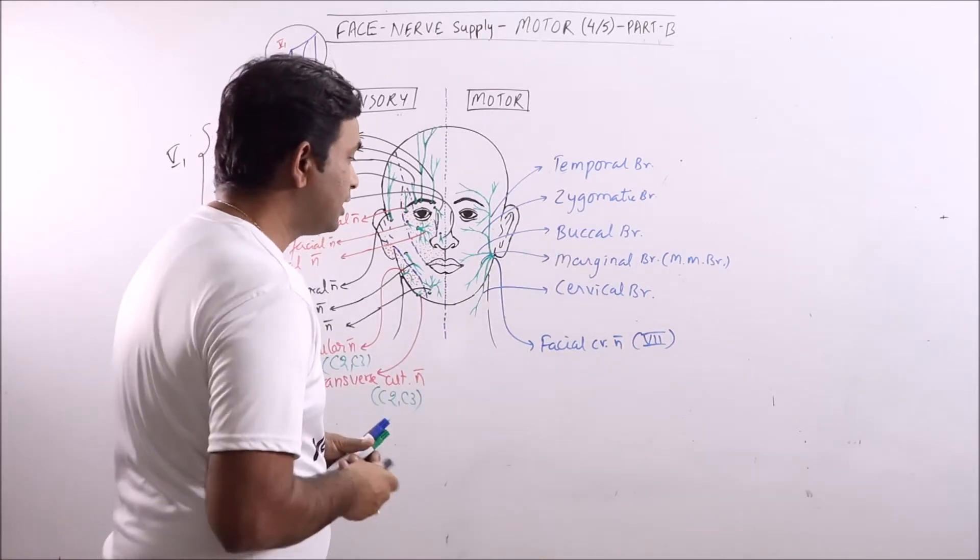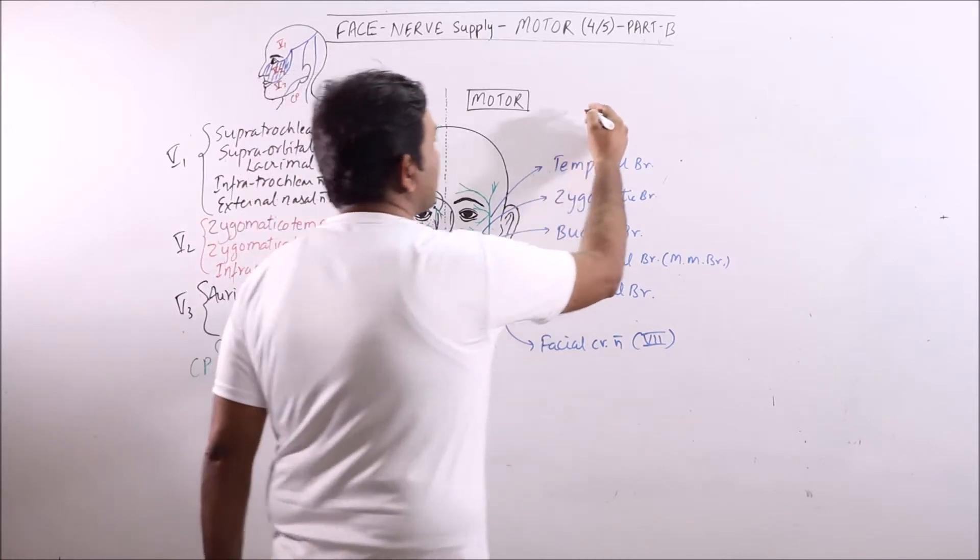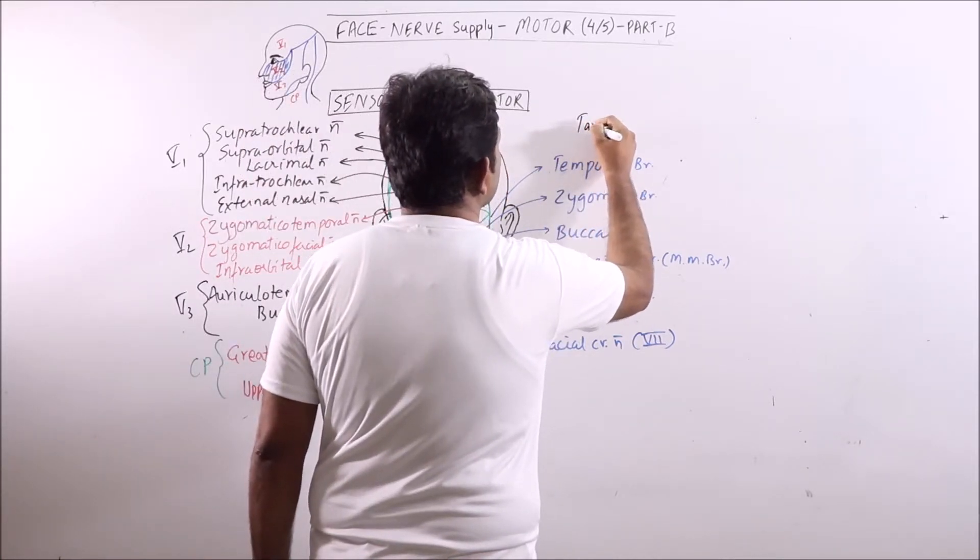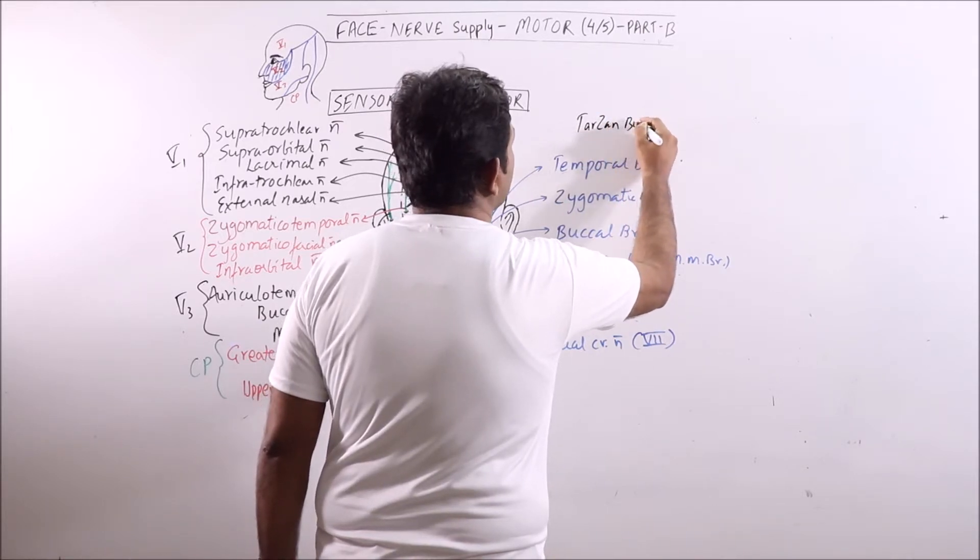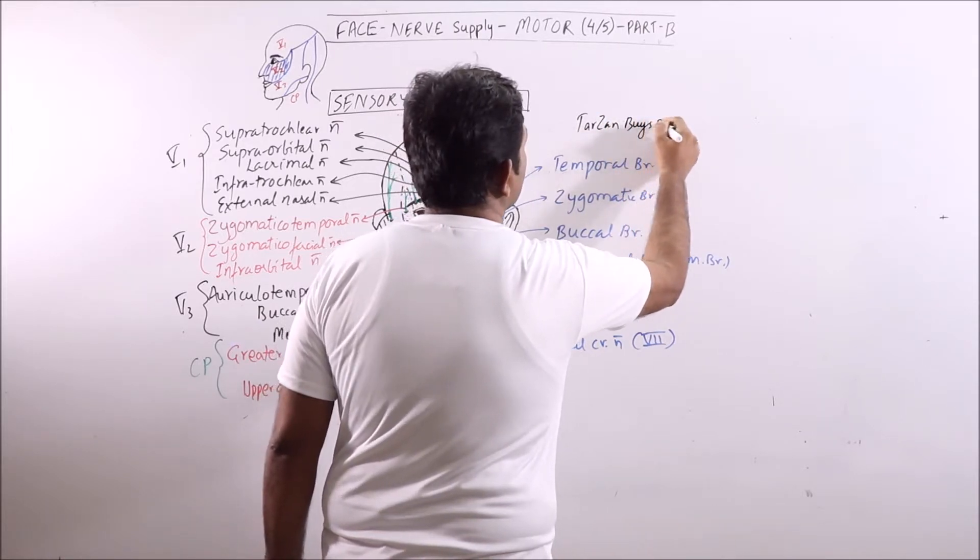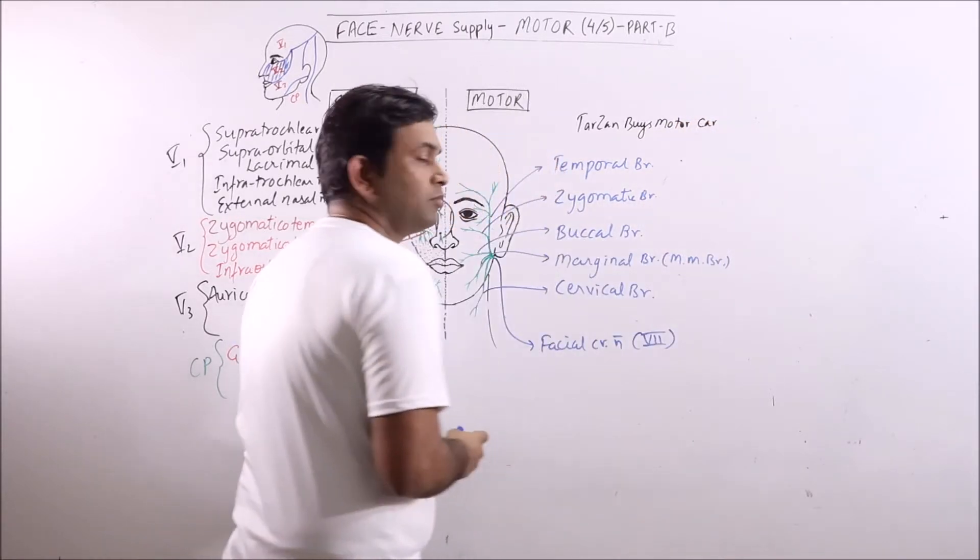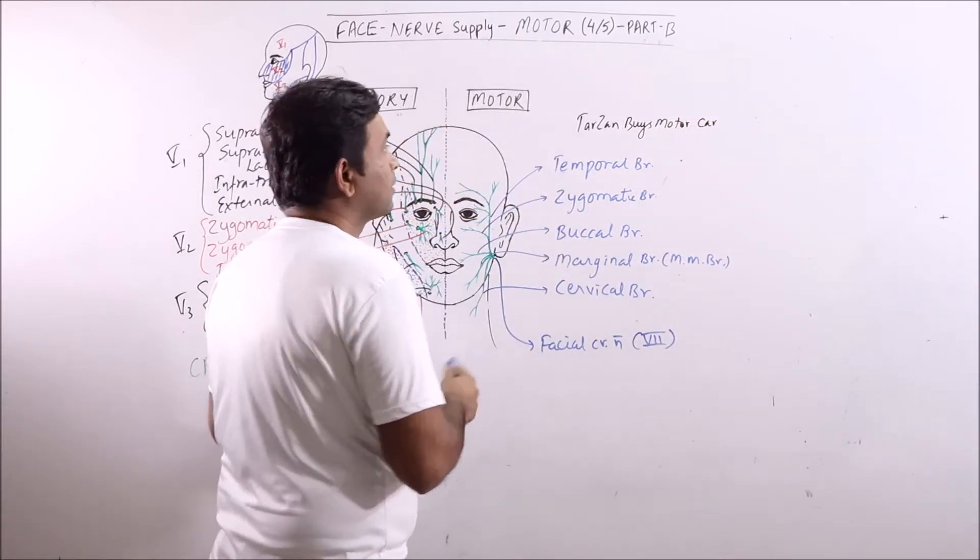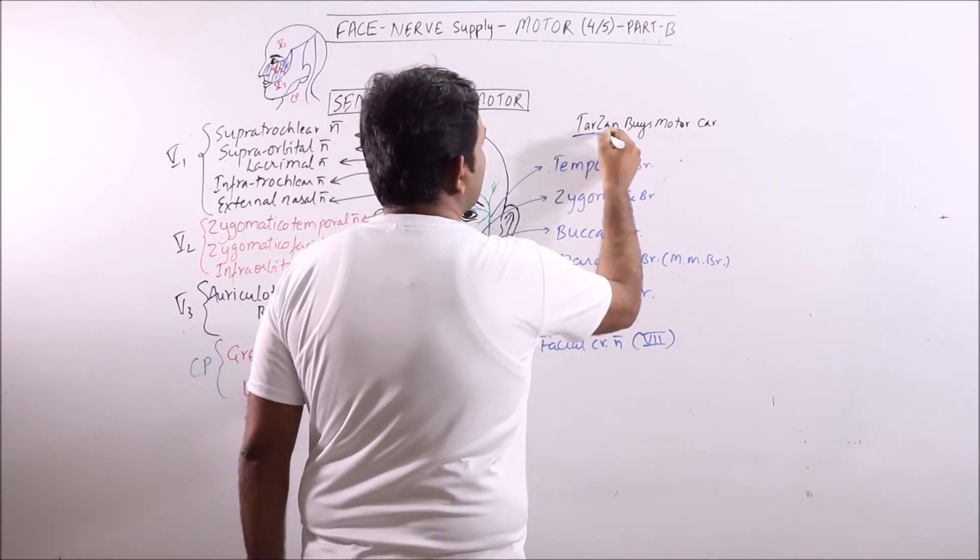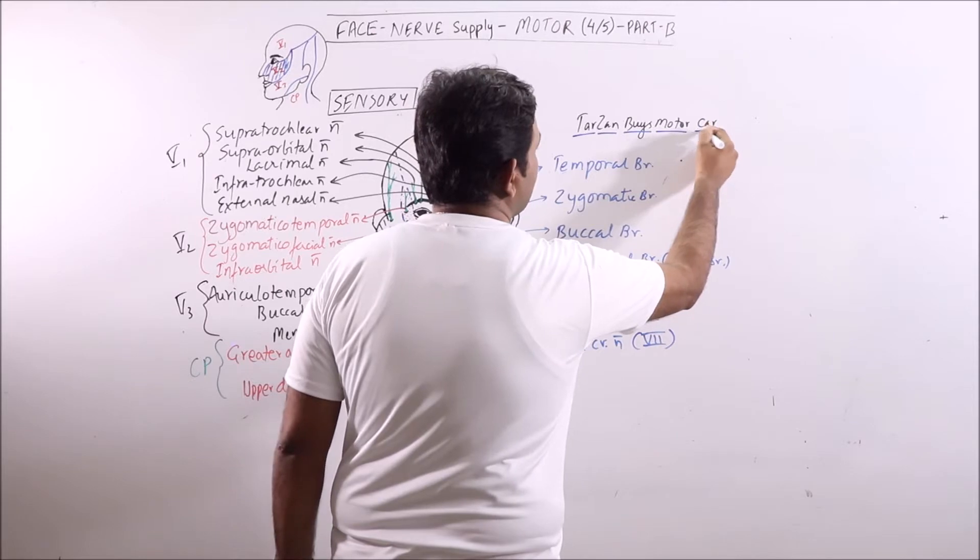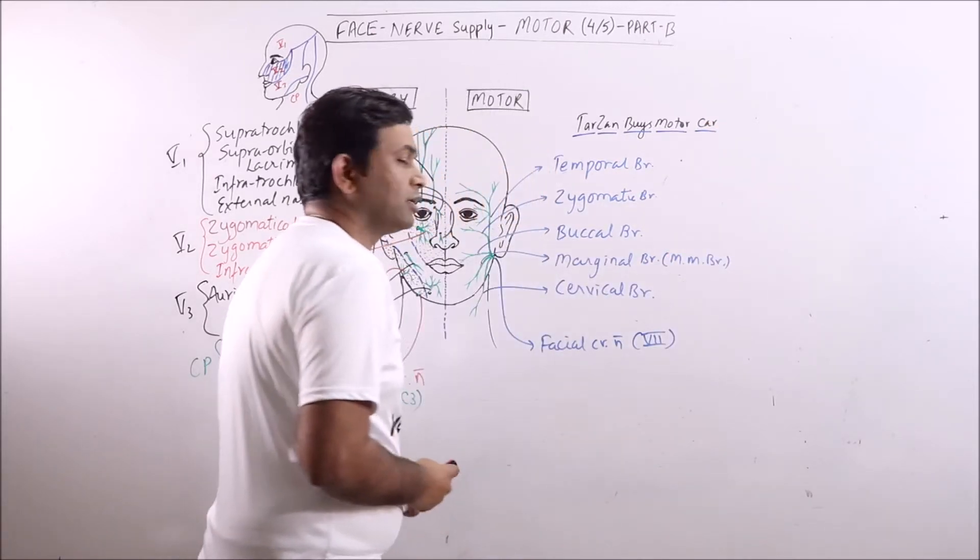We can learn them by a formula or mnemonic that is Tarzan Buys Motor Car - that is Temporal, Zygomatic, Buccal, Marginal mandibular, and Cervical branch.